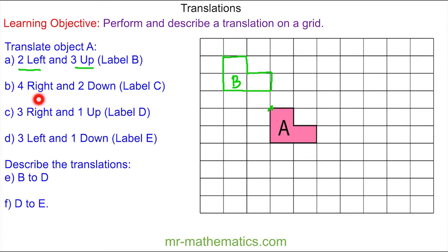This will be labelled image B. For question B, we're going to move object A four to the right and two down. I'll pick a vertex, move it four units to the right and two down, then redraw the object to create image C. I'll check it works with a different vertex — four to the right and two down — and you can see the vertices match.